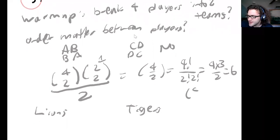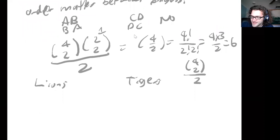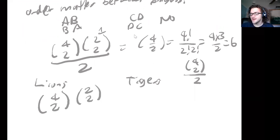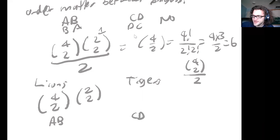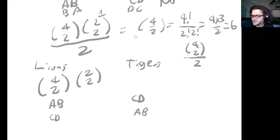So when I don't care about the teams, it ends up being four choose two over two. But if I'm choosing players for the Lions versus the Tigers, then I first choose players for the Lions and then for the Tigers. Having A and B on the Lions and C and D on the Tigers looks different from C and D on the Lions and A and B on the Tigers. So the answer changes depending on whether teams are distinguishable.